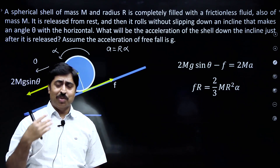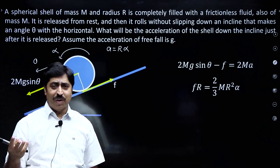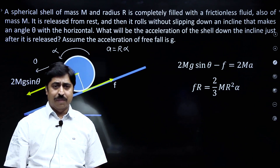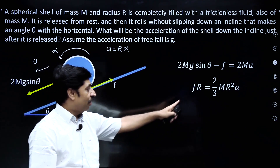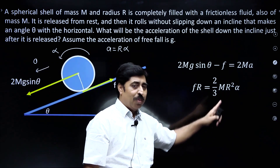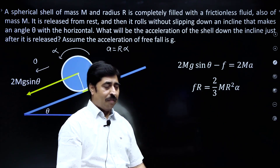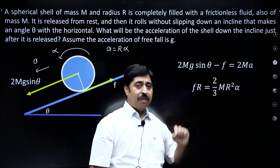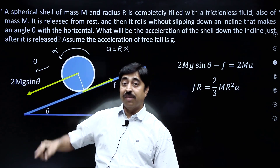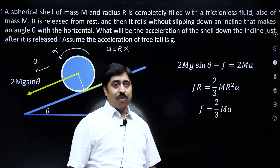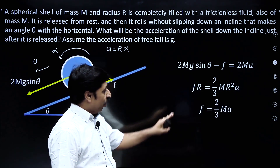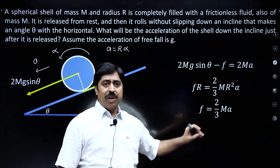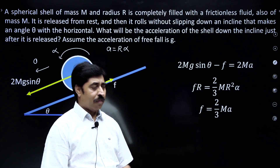Just simplify these two equations to get the value of a. Cancel one R from both sides — you are left with Rα, and Rα can be written as a. Doing that simplification gives this equation.